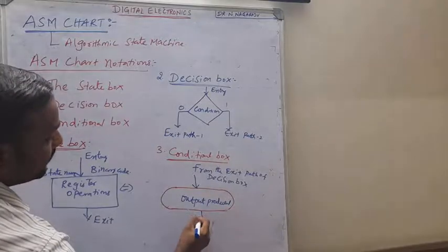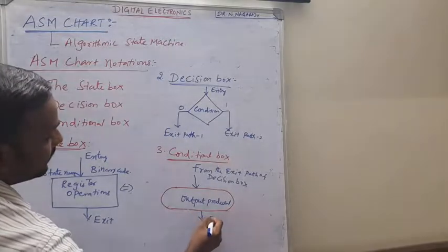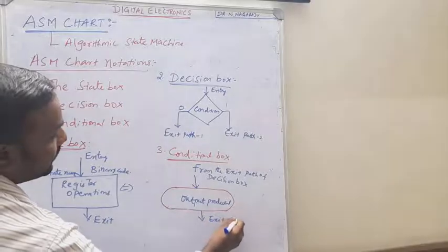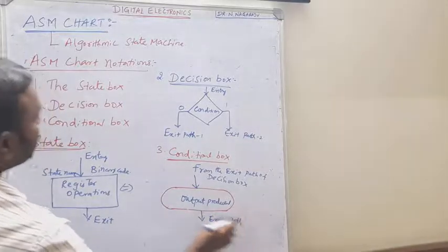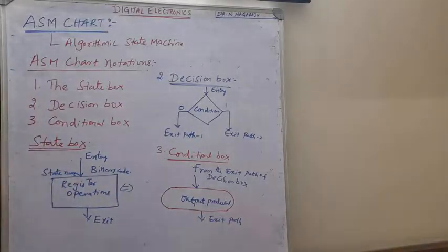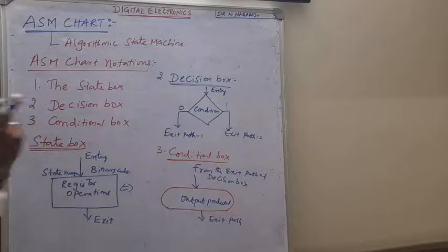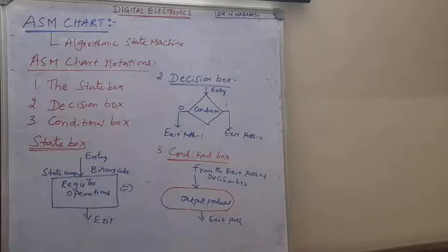The conditional box has one exit path. These are the basic ASM chart notations which are used to describe the hardware of the circuits: the state box, decision box, and conditional box.